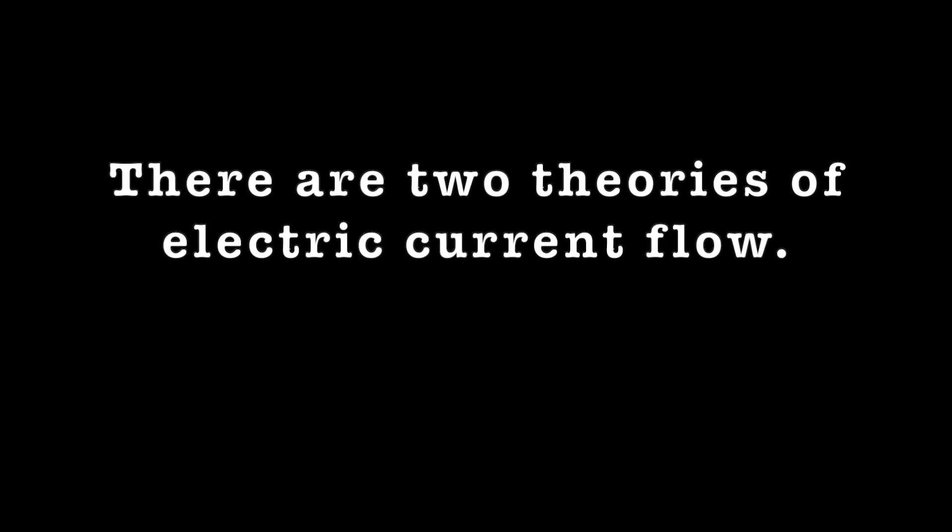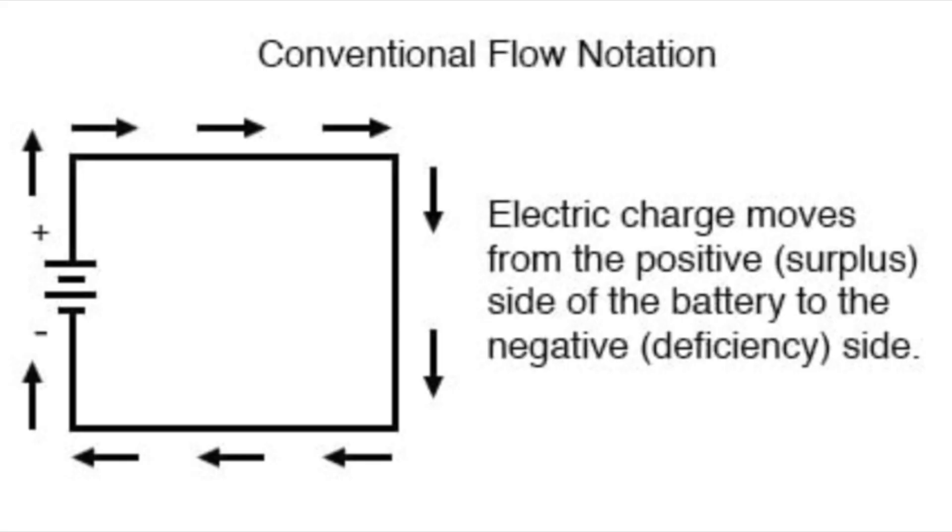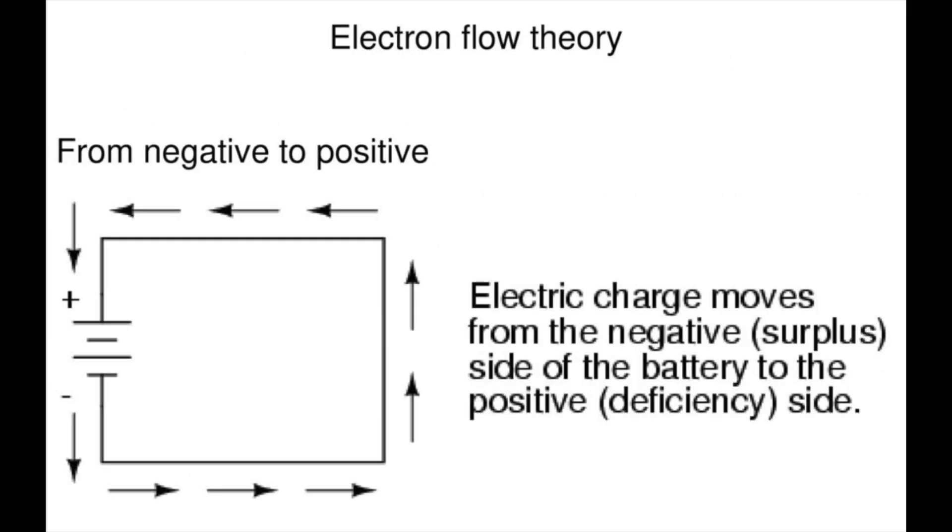There are two theories of electric current flow, called conventions. The original one is from the time of Ben Franklin, where it was believed that electric current flowed from the positive to the negative. Nowadays, that's called the conventional current. The second more current theory is from the time of Fleming, 1904, where it was observed that electrons flow from the negative to the positive.